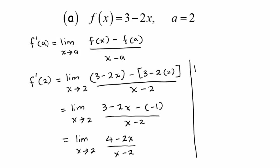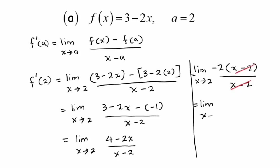I am going to factorize negative 2 from the numerator, so we get negative 2 times (x minus 2) over x minus 2. We can then cancel the common factor of x minus 2 with the denominator. What's left is the limit as x approaches 2 of negative 2, so the answer is negative 2.